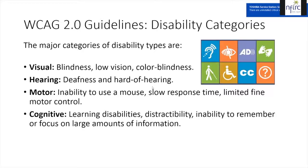Now we can move on to WCAG 2.0 guidelines. Now that we understand the importance of providing inclusive content and complying with accessibility, let's look at the guidelines and how they can help you comply with Section 508 and create inclusive online content and electronic resources. The major categories of disability types provided in WCAG 2.0 are visual, hearing, motor, and cognitive.